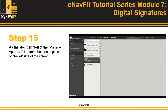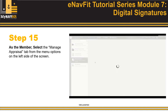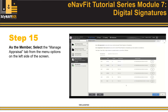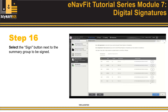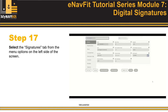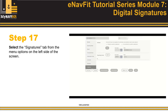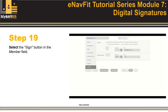Step 15: As the member, select the Manage Appraisal tab from the menu options on the left side of the screen. Step 16: Select the Open button next to the summary group to be signed. Step 17: Select the Signatures tab from the menu options on the left side of the screen. Step 18: In the Member field, the Statement of Intention must be selected before the Signature button is enabled. Step 19: Select the Sign button in the Member field.